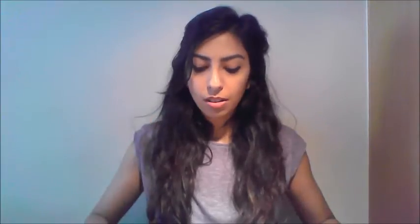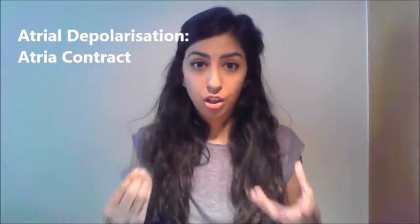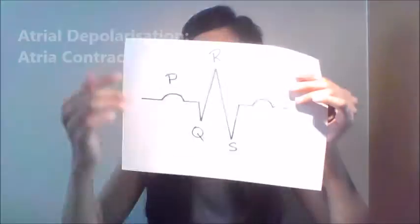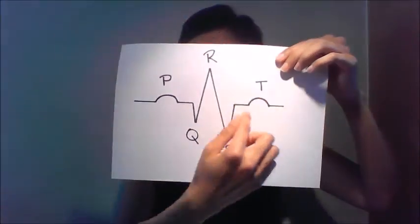What does each part mean? The P refers to atrial depolarization — i.e., when the atria are contracting. The QRS refers to ventricular depolarization, so when our ventricles are contracting. And T refers to ventricular repolarization — when our ventricles are relaxing.